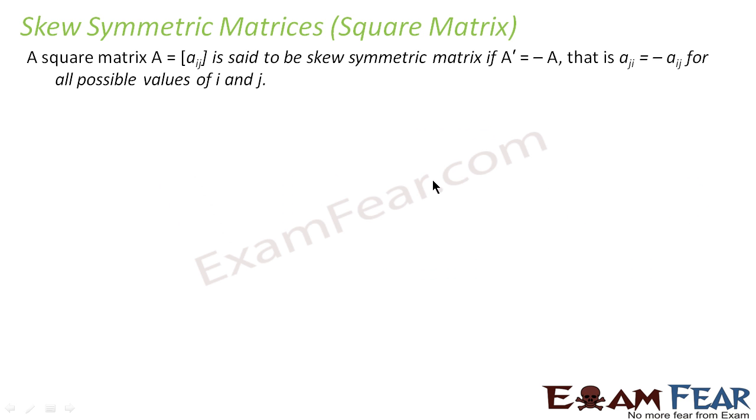A skew symmetric matrix is a square matrix where the definition says a square matrix is called skew symmetric if the transpose is nothing but minus of A. The transpose of A is minus of A.